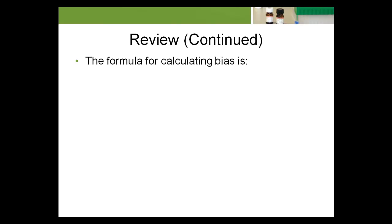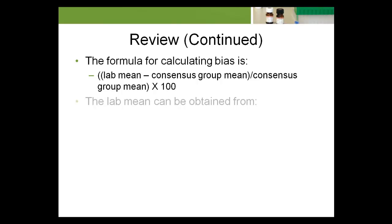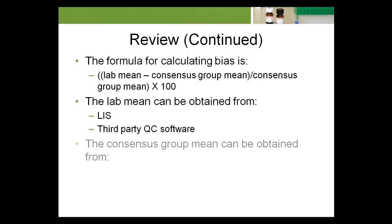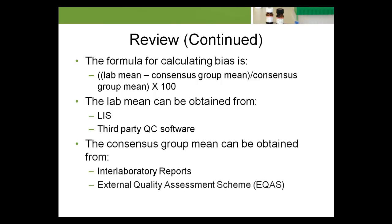The formula for calculating bias is lab mean minus consensus group mean divided by consensus group mean times 100. The lab mean can be obtained from LIS, third-party QC software. The consensus group mean can be obtained from interlaboratory reports, external quality assessment scheme.